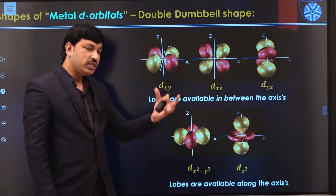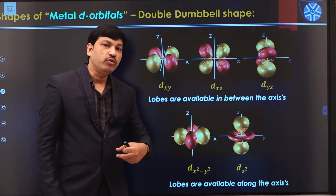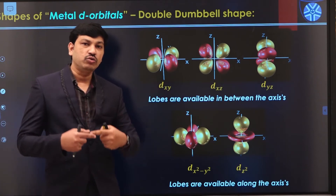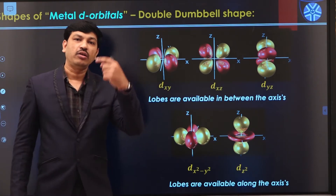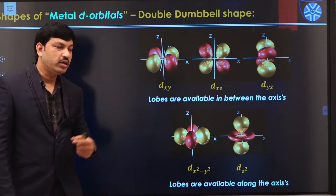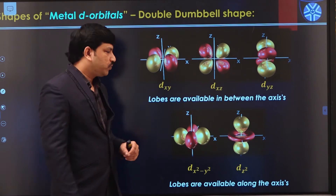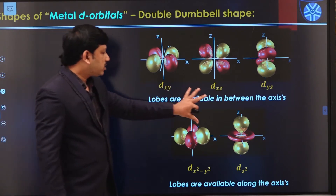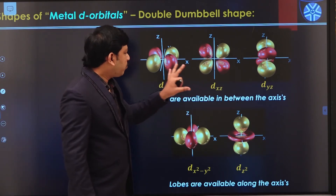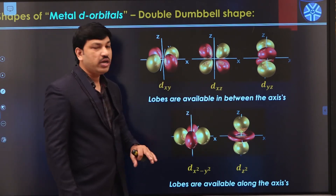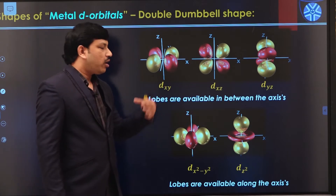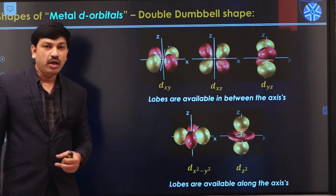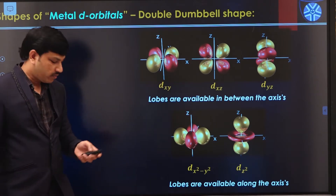In an octahedral complex, the six ligands approach along the three coordinating axes: two ligands along the x-axis, two along the y-axis, and two along the z-axis. Let us see how one of these d orbitals actually interacts with the approaching ligands.